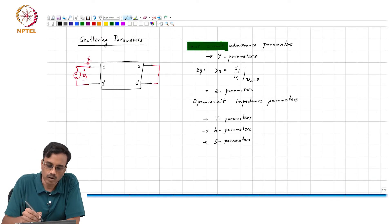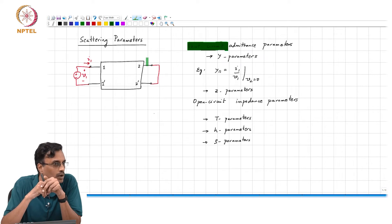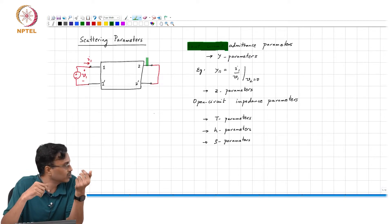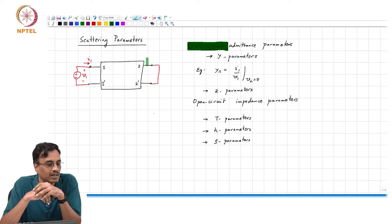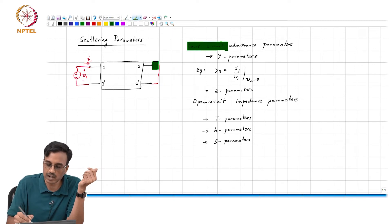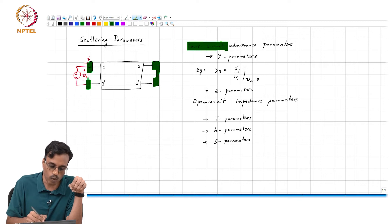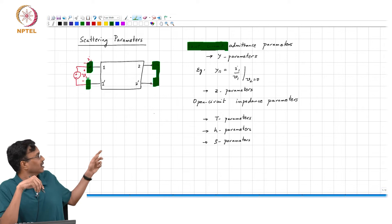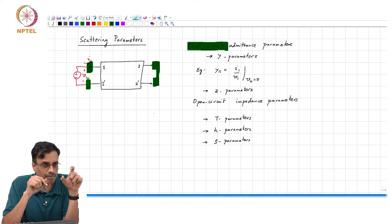When we say we are going to measure y-parameters in a lab, it is one thing to draw a two-port box and draw a perfect short circuit at port 2. It's quite another thing to do the same thing in the lab, because many times you not only do the theory, you also want to make measurements and prove that your device or amplifier or system has the two-port parameters that you think it should have.